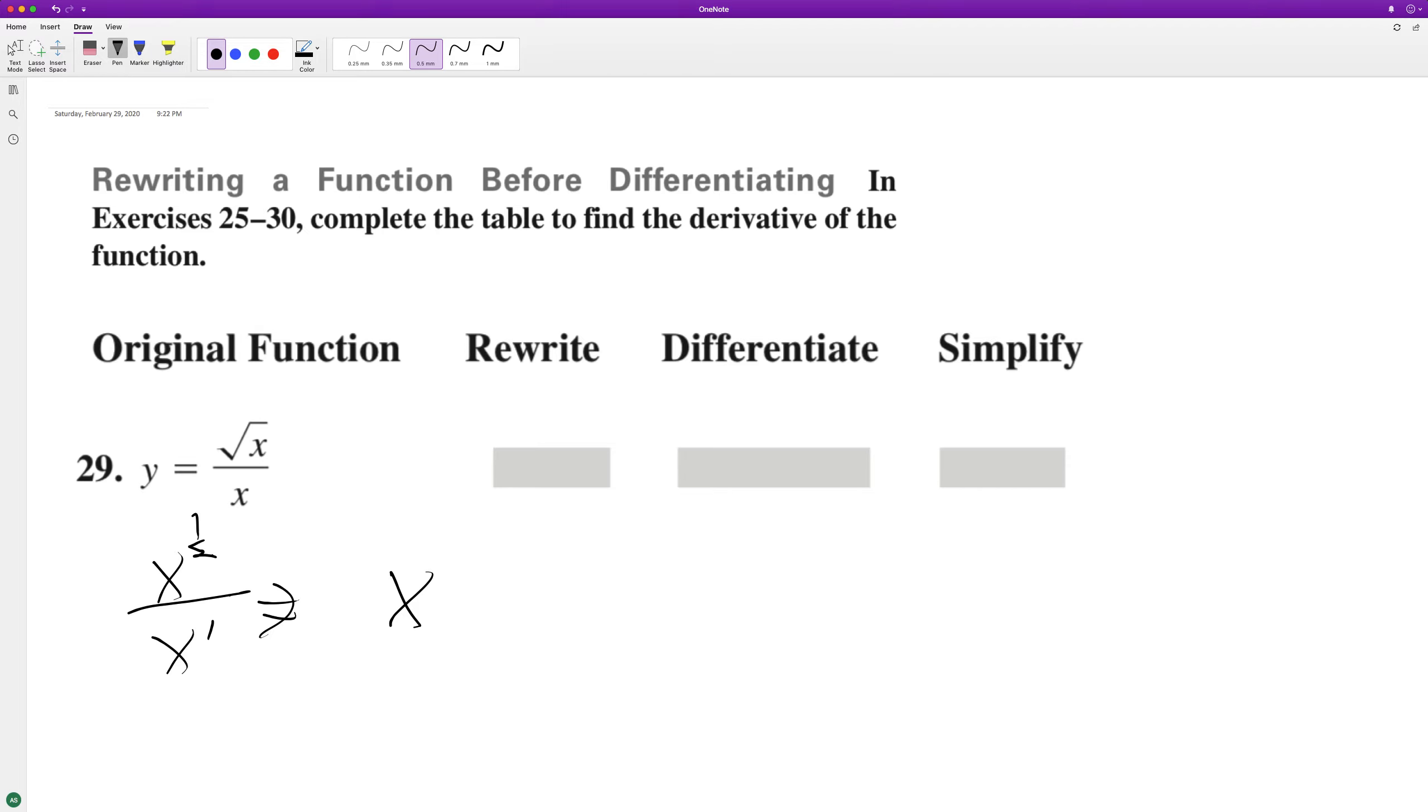well, 1 half. Okay, so I'm sorry. The x on the bottom can cancel that, so we have 1 over x raised to the 1 half, and we can rewrite this as x raised to the negative 1 half.